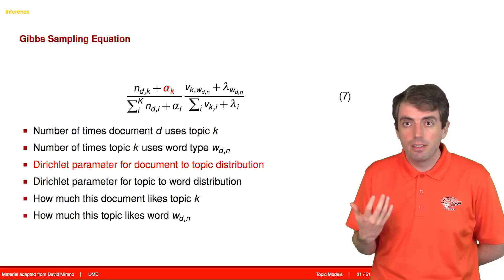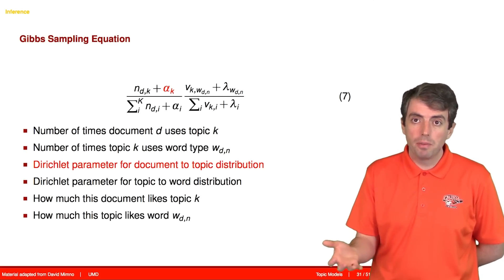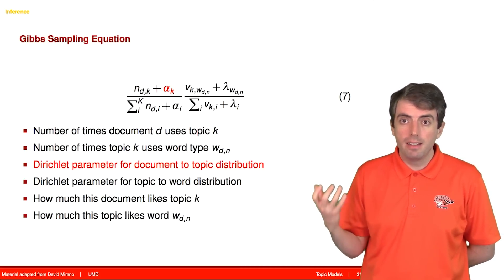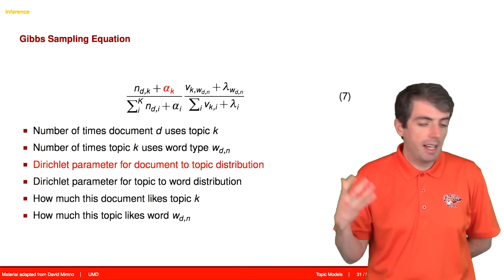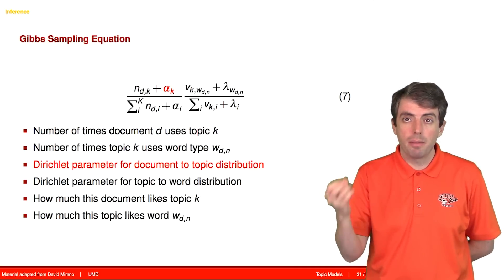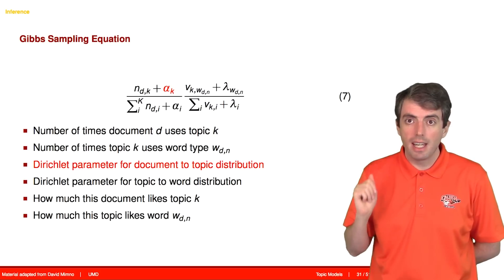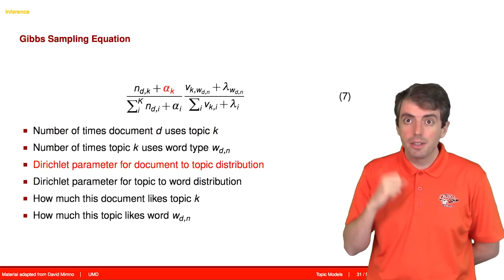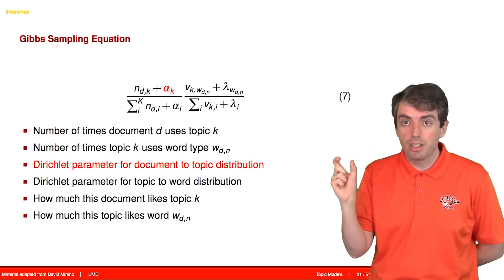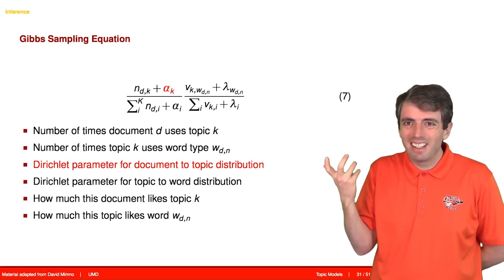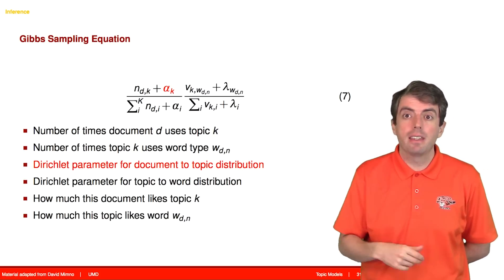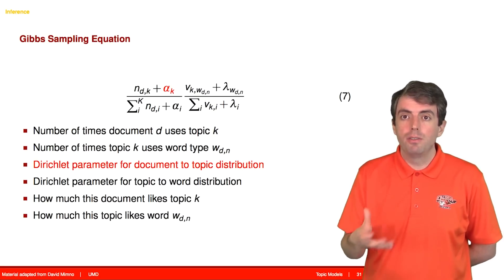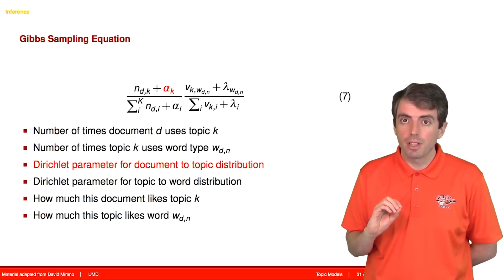Even if a document has never used a topic before, if the number of times that the document uses this topic is zero, so n sub dk is zero, this first term won't go completely to zero. You're still going to add in this alpha term that acts as a smoothing term, and is in fact the Dirichlet parameter that gives you the multinomial distribution over topics.